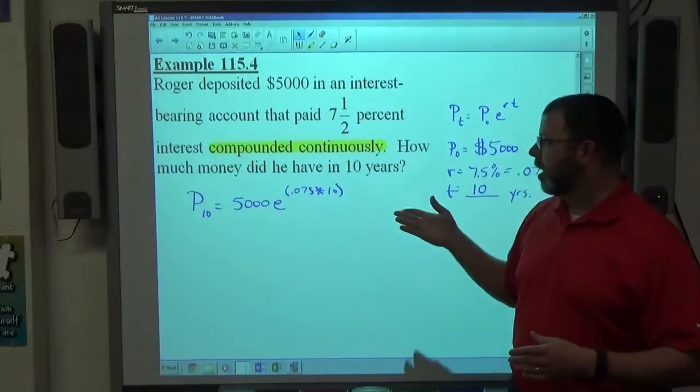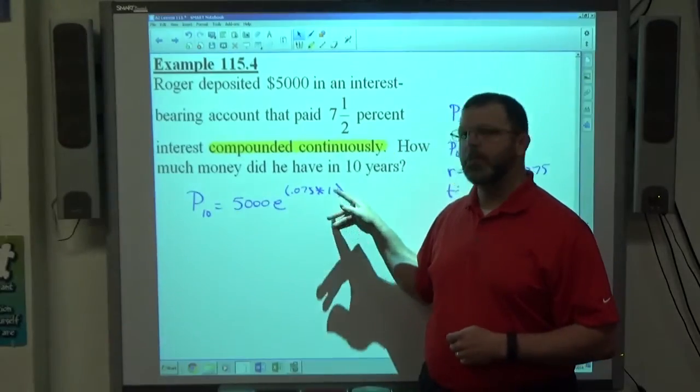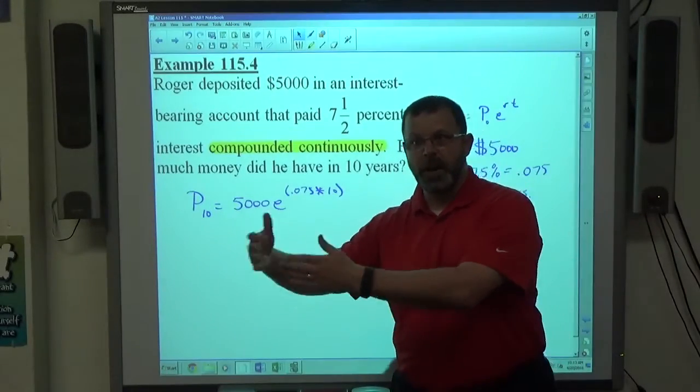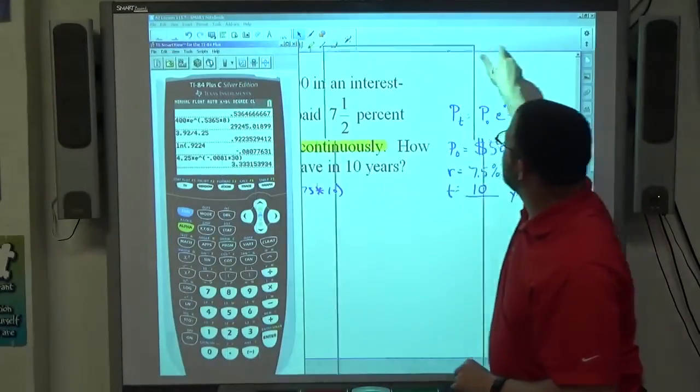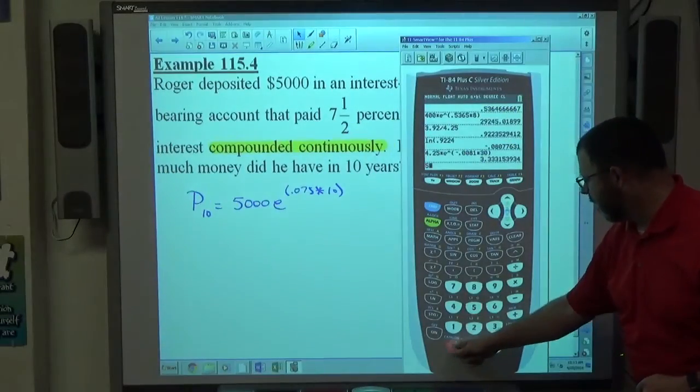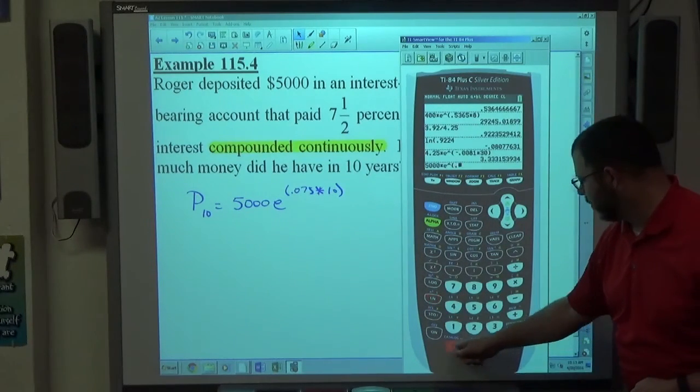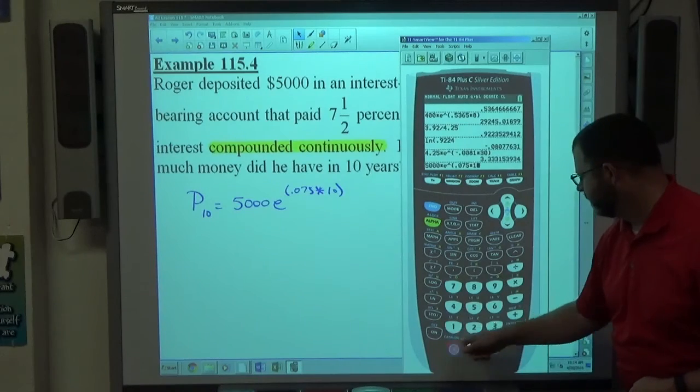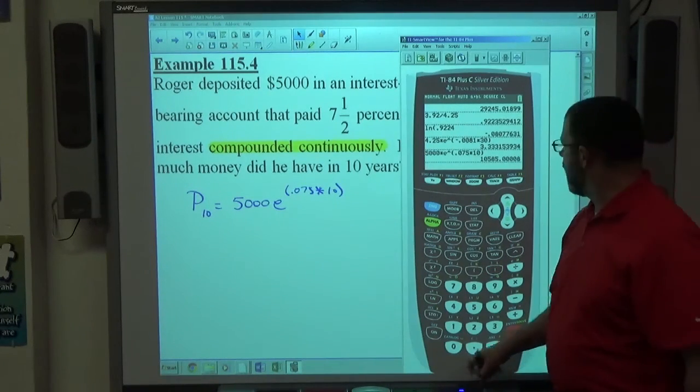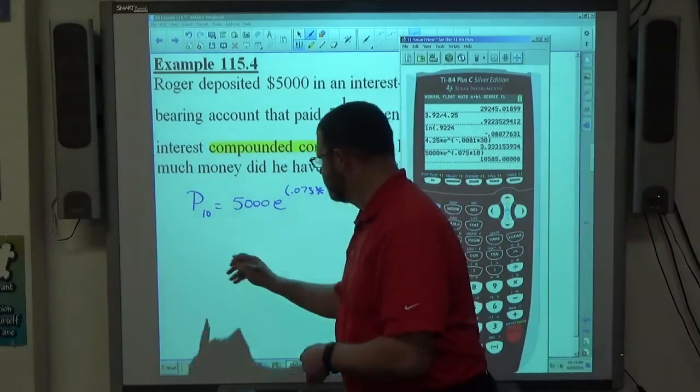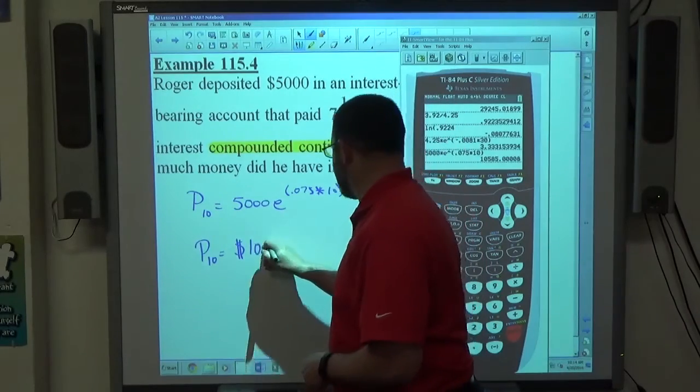The other thing they might ask you is, when will Roger have $10,000? Put $10,000 here, then you've got to find this number up here, then it's going to work more like finding the K on the other problems was. All right, so if we take a look over here, if I type in 5,000 times e to the 0.075 times 10, that comes out to $10,585.00. $10,585.